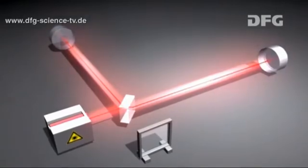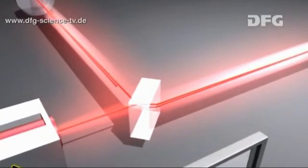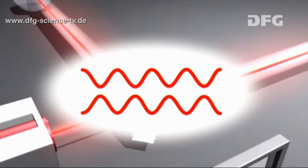As soon as the laser beams reach the beam splitter again, they are superimposed so that the wave trains of the two light beams from the two arms cancel each other out.